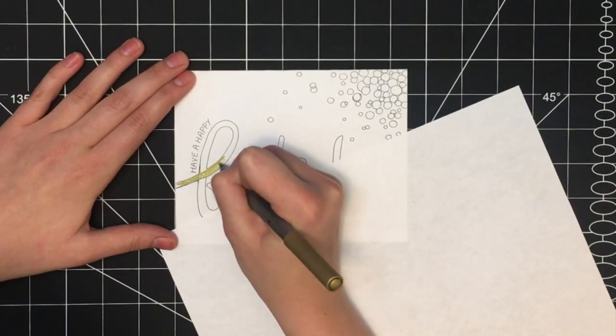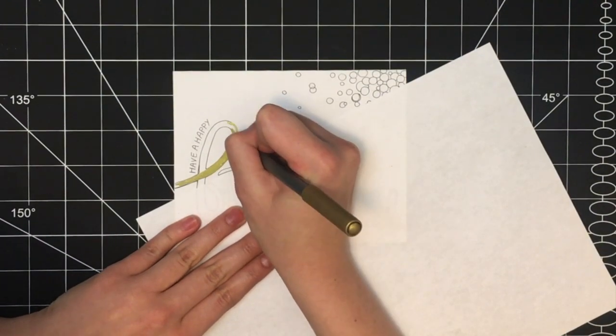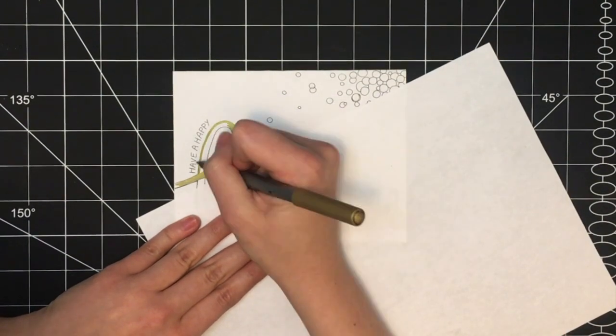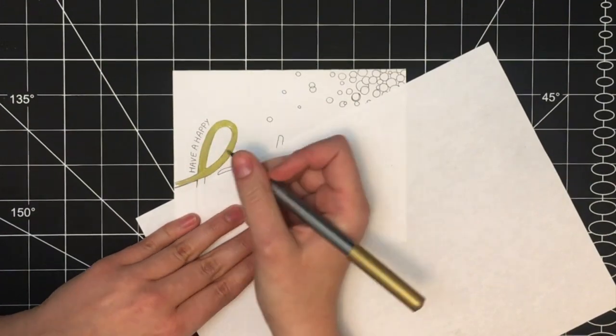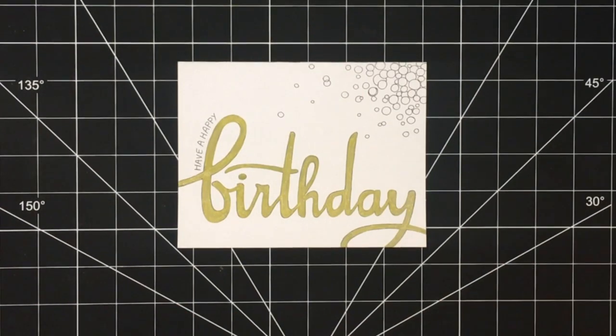And next I filled in the word Birthday using a gold metallic pen. I find this really gives the word a nice pop of color. I also find this particular metallic pen, which I've linked below, is really forgiving, so it's very easy to trace over in black if you make a mistake.